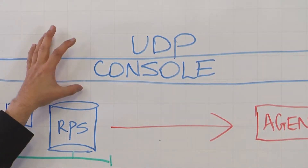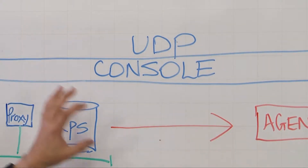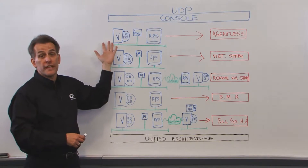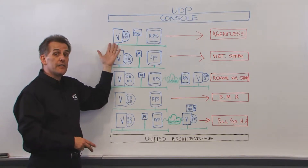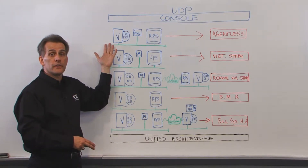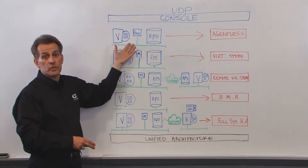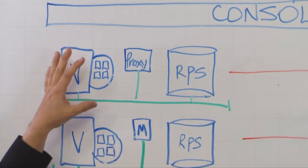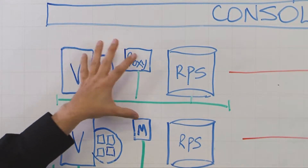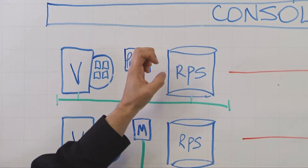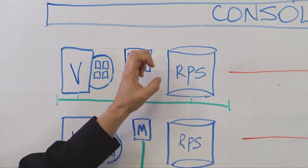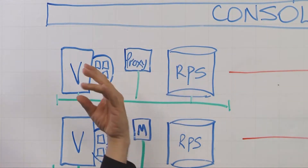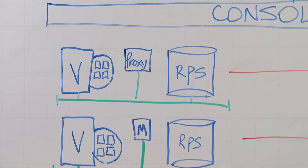From the UDP console, we'll start first with Agentless. This is truly Agentless — nothing is installed onto the hypervisor or onto the virtual machine. These Agentless backups go through a proxy machine and are stored in the recovery point server. At the recovery point server, there's deduplication, encryption, and compression.